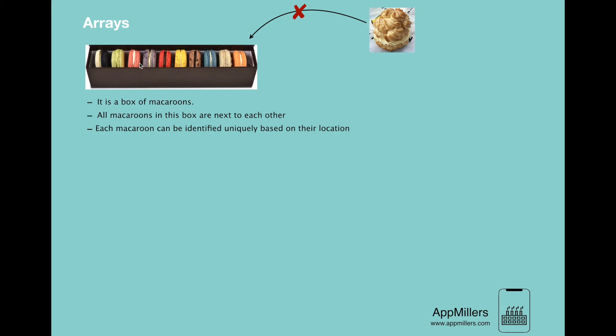So let's say, if we want to take this macarons over here, the location of this macarons is one, two, three. So this is unique location for this. Then if we want to take this macarons from here, the location of this macarons will be four.